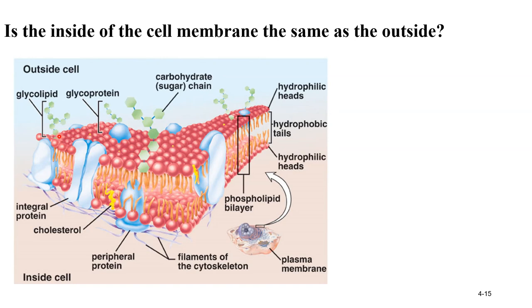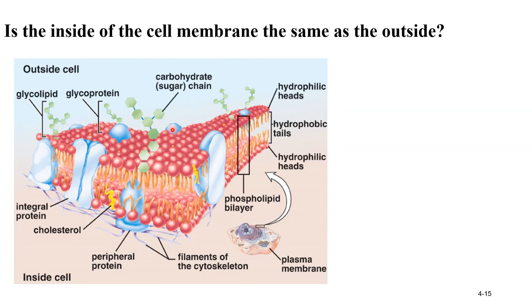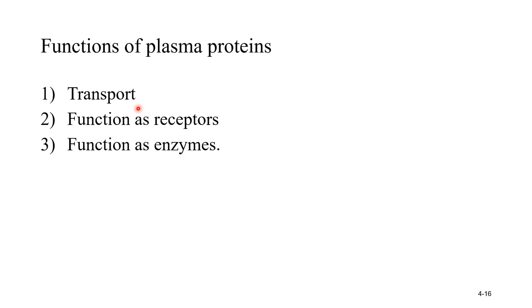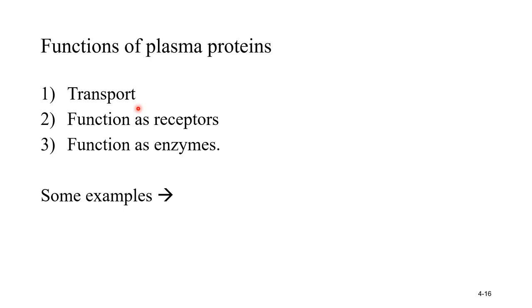This is the glycolipid, glycoprotein. Some proteins are here — this is the integral protein. It is acting as a channel, ion channel. Some are acting as carrier proteins, some as receptor proteins. So these are the functions of protein: transport, like carrier protein, helping into the transport. They may function as receptors or enzymes, acting as enzymes — like tyrosine kinase.